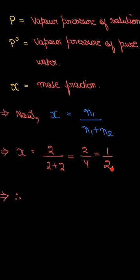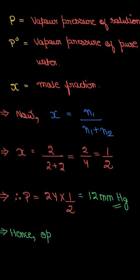Now we will just put this value in the equation which we wrote. That is P is equal to 24 into half. So P is equal to P⁰ into X. P⁰ is the vapor pressure of pure water, that is 24 given in the question. Mole fraction we just calculated half. So the vapor pressure of solution comes out to be 12 mm of Hg.